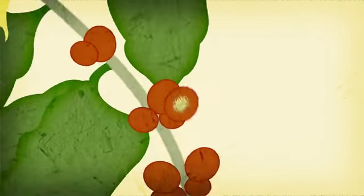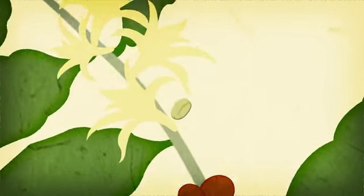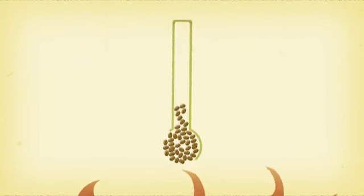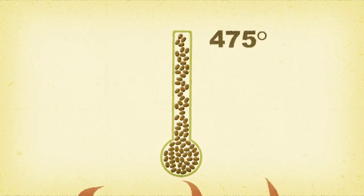Green coffee beans. Yeah, we said it, green. Those brown coffee beans you're used to seeing start out green. Their brown color comes from being roasted at about 475 degrees Fahrenheit.